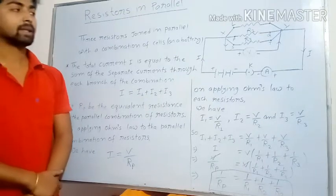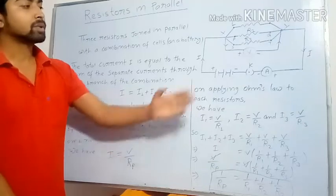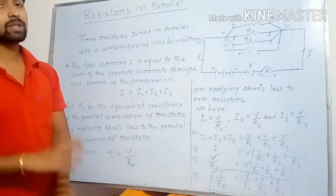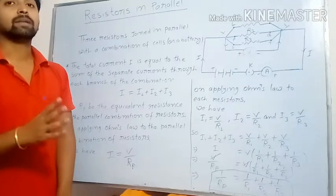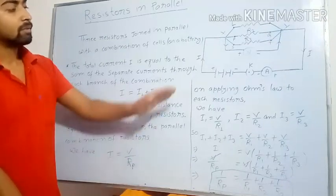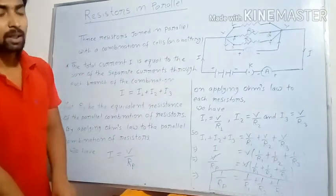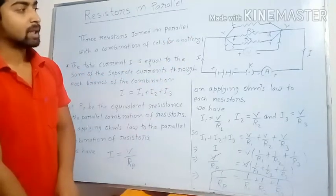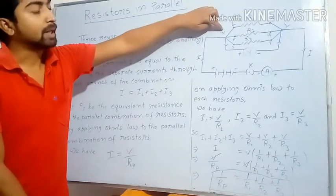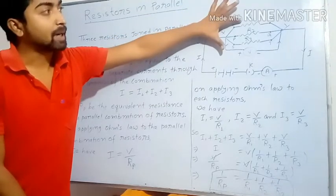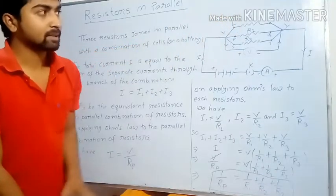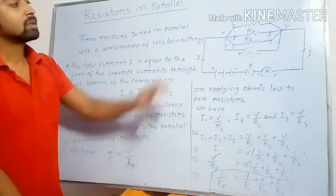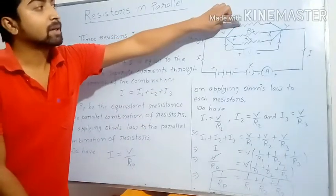When current I flows through this circuit, since electric current is a flow of charges, when charges reach point X, there are three paths — three resistors. So the charges will divide here into three parts and flow through each of the three resistors.